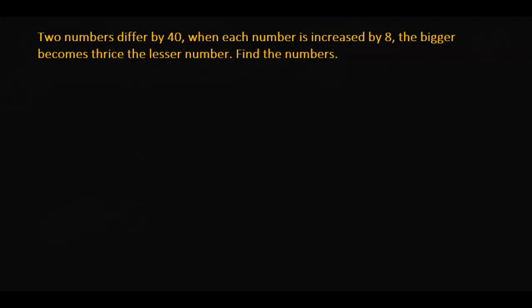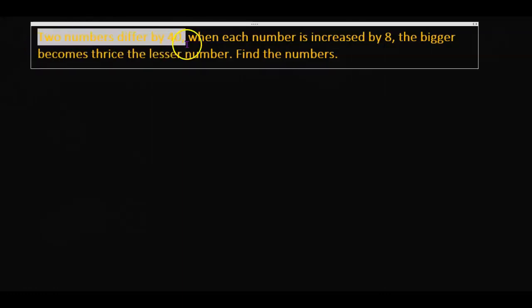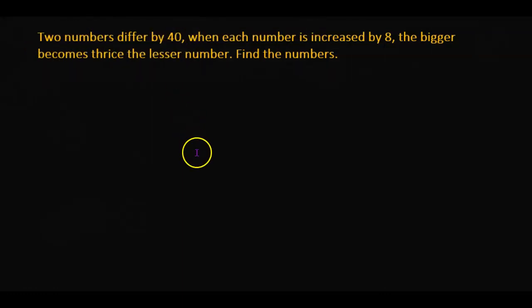The first part tells us that the two numbers differ by 40. This means one of the numbers is greater than the other number by 40. We can think of it like this: if one number is this much and we don't know what this number is.